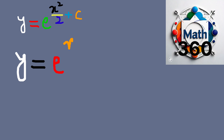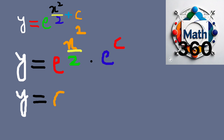To isolate y we undo the natural log by exponentiating both sides, giving y equals e raised to the power of x squared over 2 plus c. Using properties of exponents, this becomes y equals e to the x squared over 2 times e to the c. Since e to the c is just another constant, we call it c prime, so y equals c prime times e raised to the power of x squared over 2. We usually denote this constant simply as c. Thus the general solution is y equals c times e raised to the power of x squared over 2, where c is an arbitrary constant.